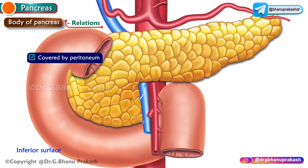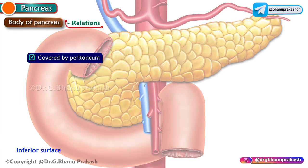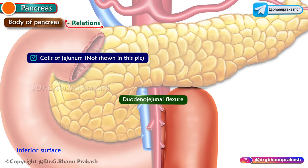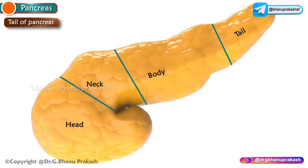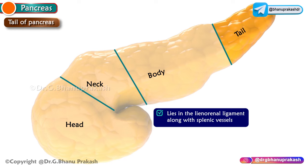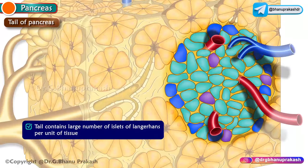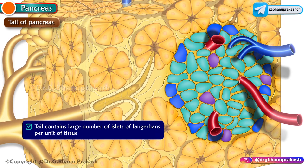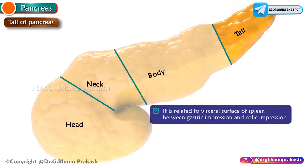The inferior surface is covered by peritoneum and is related to the duodenojejunal flexure and coils of jejunum, while the posterior surface is not covered by peritoneum. The tail is the narrow left end of the pancreas, lying in the lienorenal ligament along with the splenic vessels. It contains a large number of islets of Langerhans per unit tissue compared to other parts, and is mainly related to the visceral surface of the spleen between the gastric impression and colic impression.